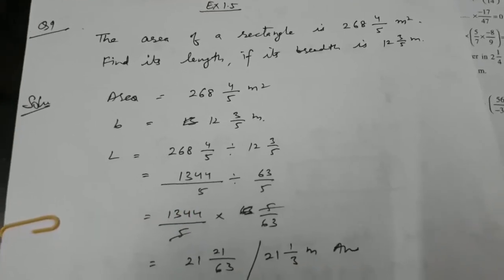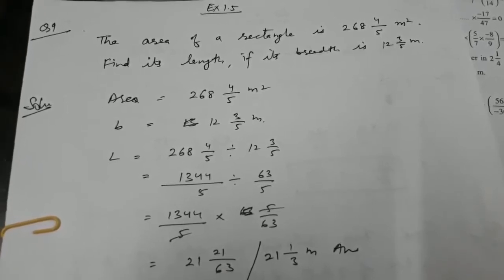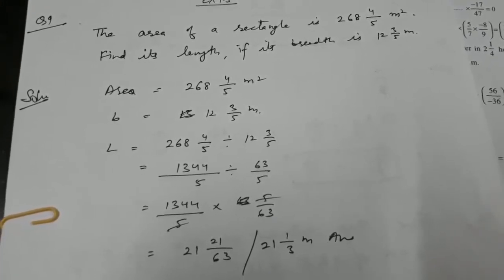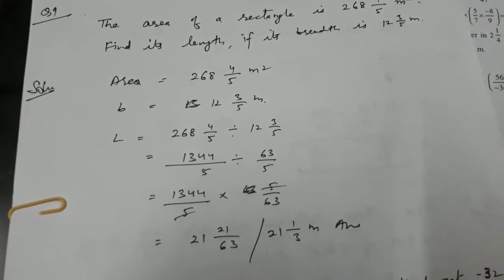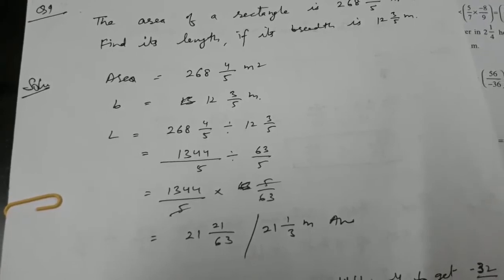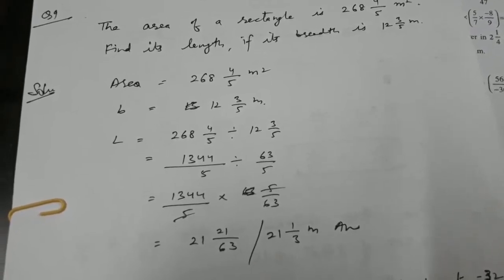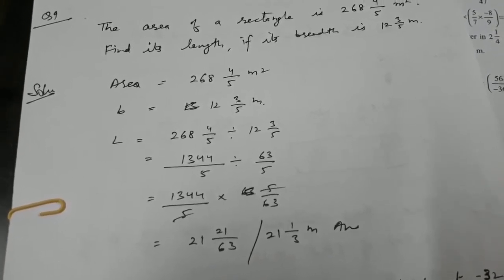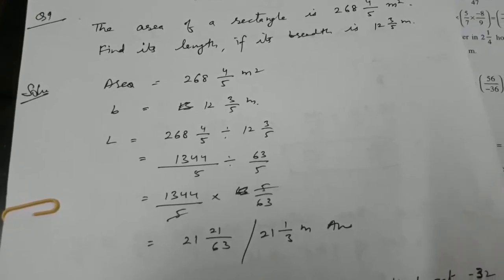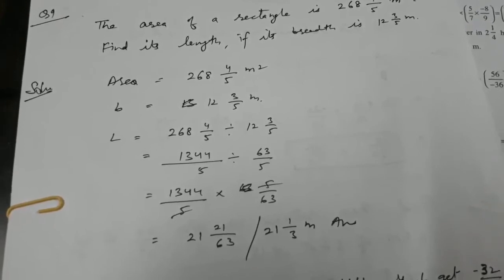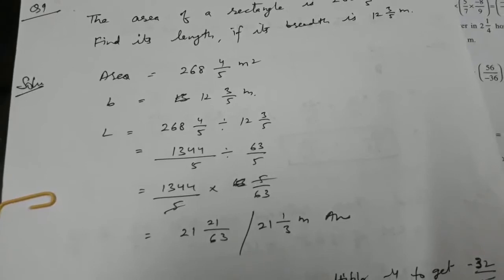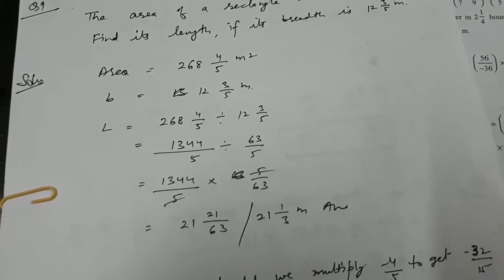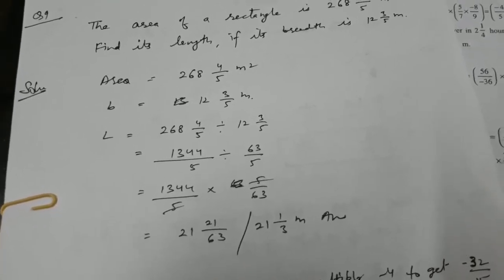In question number 9, we are given the area of a rectangle as 268 whole number 4 by 5 square meters. We have to find its length if its breadth is 12 whole number 3 by 5 meters. To calculate the length, we divide the area by the breadth: 268 whole number 4 by 5 divided by 12 whole number 3 by 5, that is 1344 by 5 divided by 63 by 5, which equals 1344 by 5 into 5 by 63.